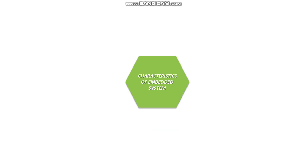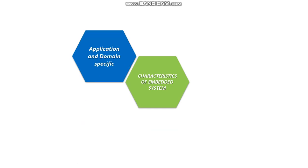The first one is the characteristics of embedded system. The first one is application and domain specific. So as we all studied that embedded system is designed for a specific task. It might be application specific or domain specific. An embedded system is designed for specific purpose only. It will not do any other task.